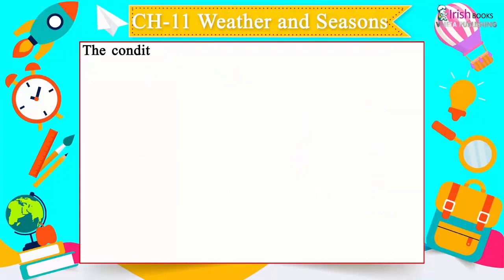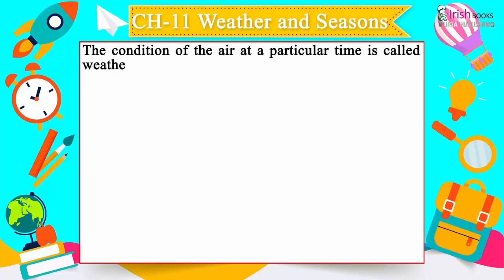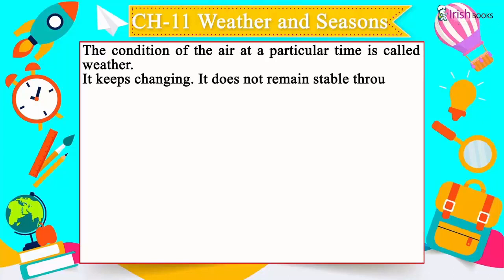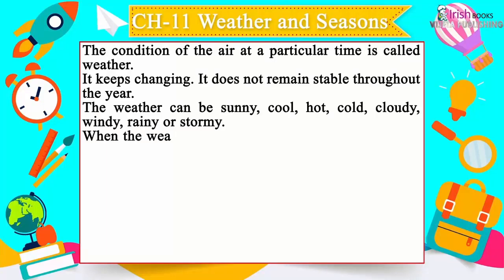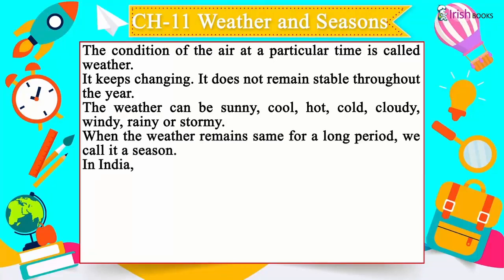The condition of the air at a particular time is called weather. It keeps changing and does not remain stable throughout. The weather can be sunny, cool, hot, cold, cloudy, windy, rainy, or stormy.